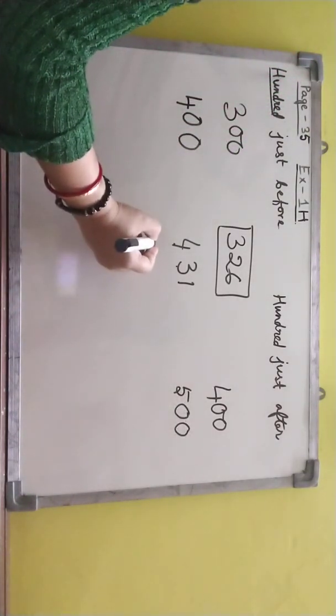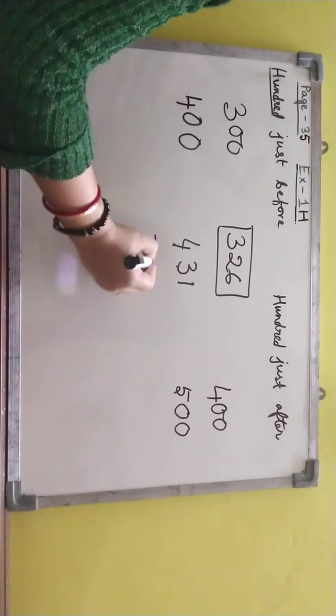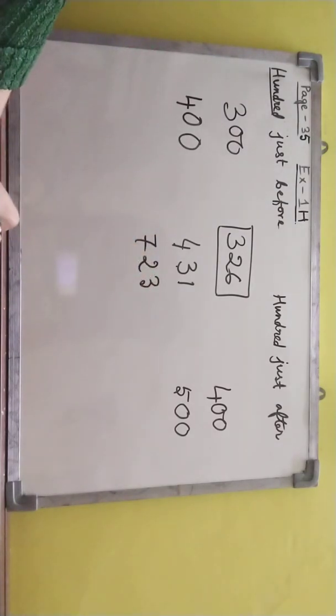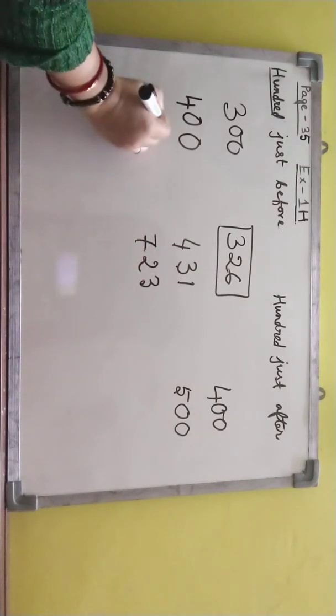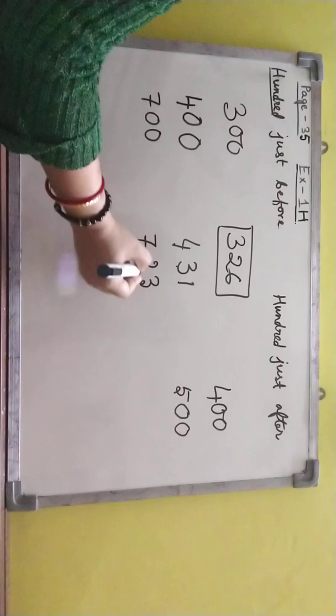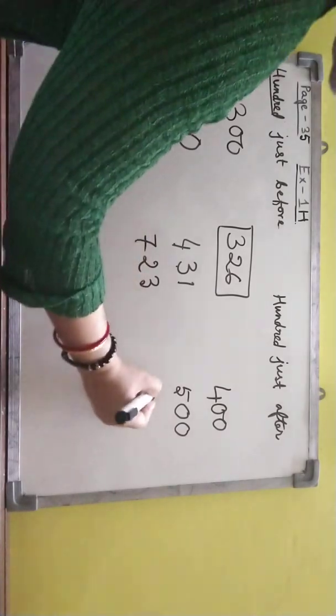Suppose more, 723. So in this case ones tens hundreds, so 700. Ones tens hundreds, so seven will be 800.